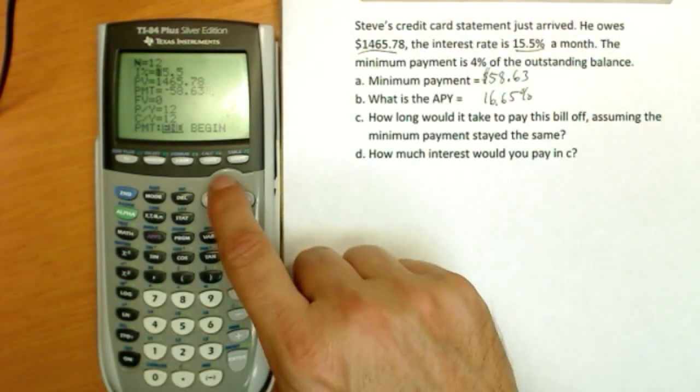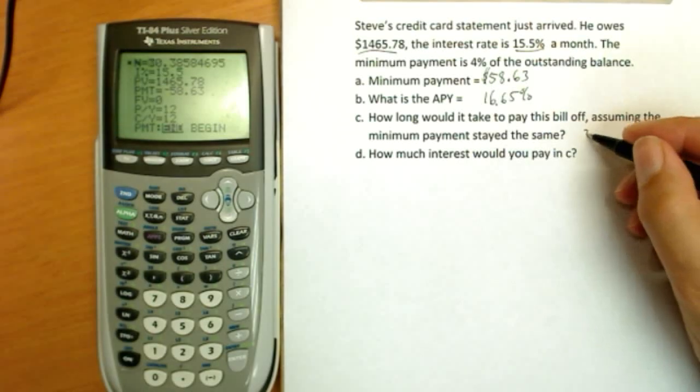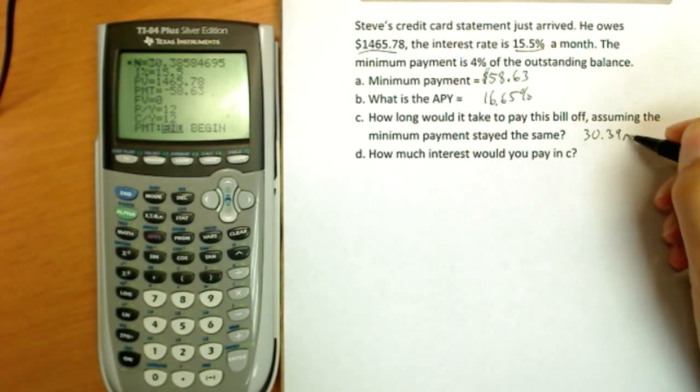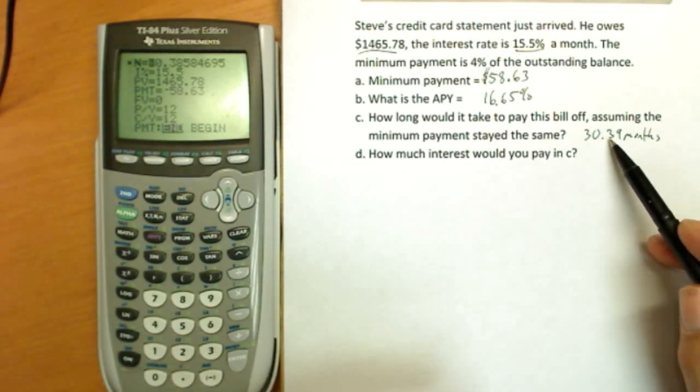And now we'll solve for N. We find 30.385, basically 30.39. So 30.39 months. Obviously you're going to get a bill on the 31st month; it'll just be for a small amount since you're going to be at 0.39. The last bill will simply be a different amount.